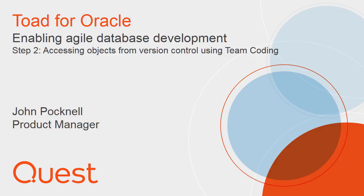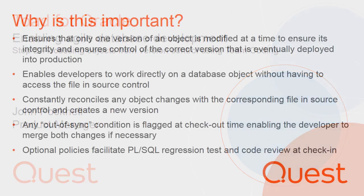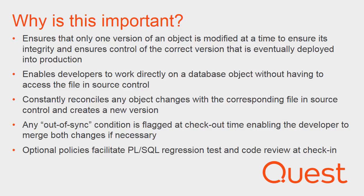Step one covered the initial setup of team coding and the integration with a back-end version control system. Using team coding with version control ensures that only one version of an object is modified at a time, to ensure its integrity and to ensure control of the correct version that is eventually deployed into production. Using team coding enables developers to work directly on a database object without having to access the file in source control. Team coding constantly reconciles any changes that are made to database objects with the corresponding files in source control and creates a new version as the editing session is completed.